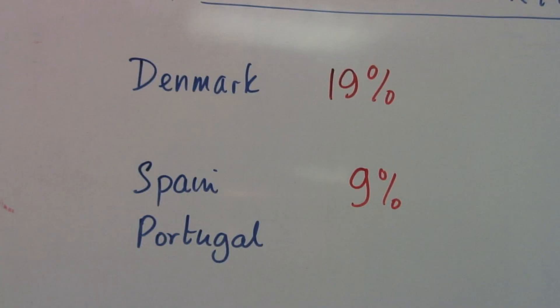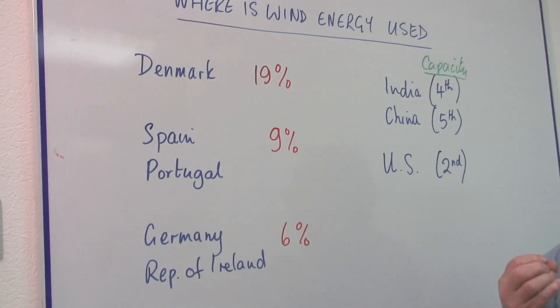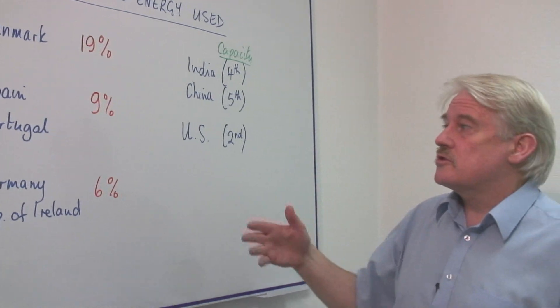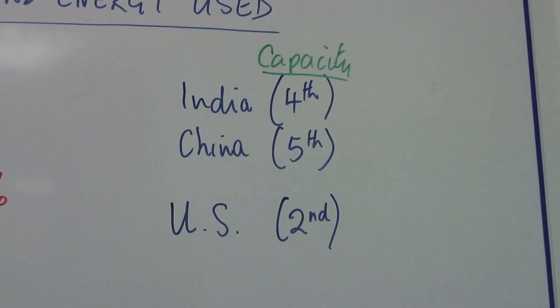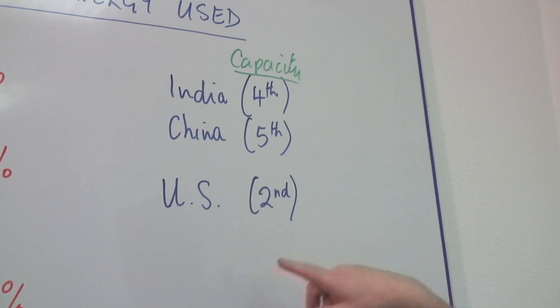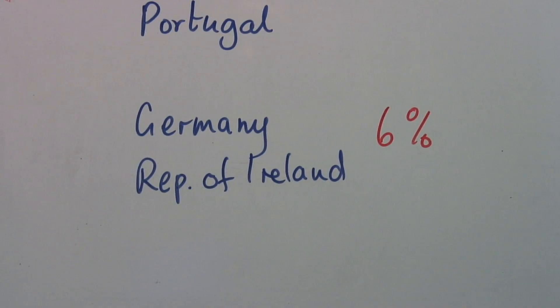And Europe is actually very high on the proportion of wind energy used. The biggest users, some of the biggest users, here we've got the United States second, fourth India, and China fifth. Actually, the biggest producer of wind energy is Germany. But because the country is big, it's only a small proportion.